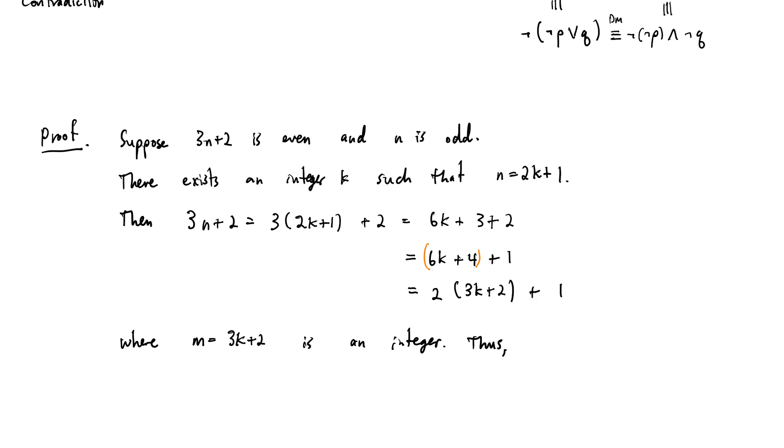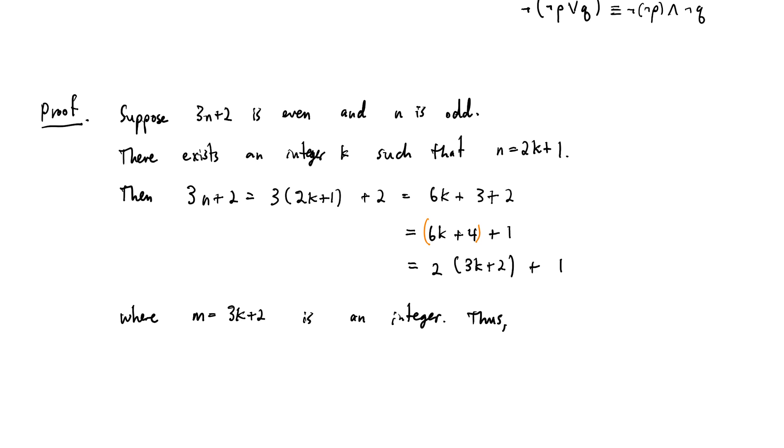Thus, our number 3n plus 2 is actually the same as 2m plus 1, which is odd, an odd number. Notice that in our assumption up here, we assume that 3n plus 2 must be even. Down here we have that 3n plus 2 is odd. There's your contradiction right there.